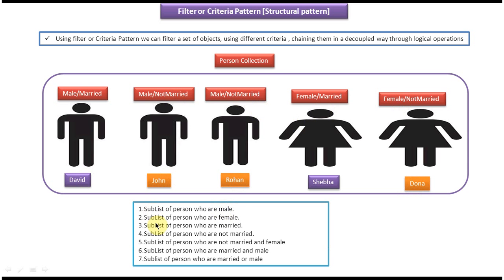We may want to get a sub-list of persons who are male, or female, or married, or not married. We may also want a sub-list of persons who are not married and female, or married and male, or married or male. For all these scenarios, we can use the filter or criteria design pattern by writing criteria with logic to get different kinds of sub-lists.